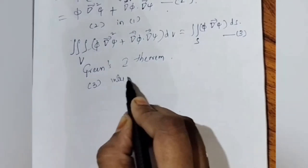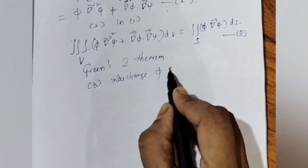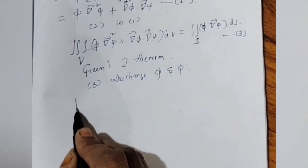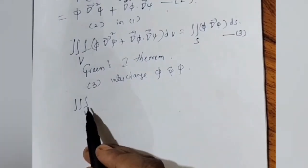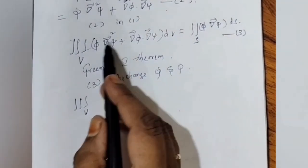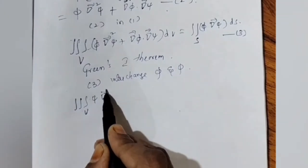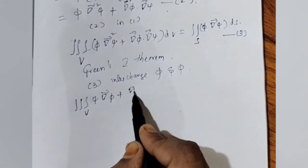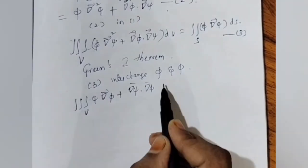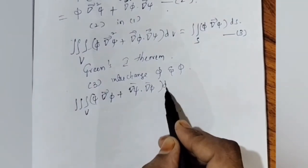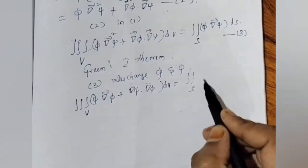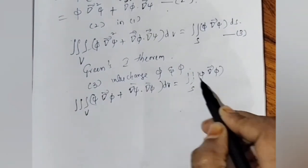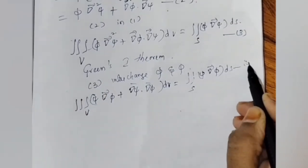Now in equation 3, interchange π and ψ. We get: volume integral of (ψ∇²π + ∇ψ · ∇π) dV equals surface integral of ψ∇π · dS. Put this as equation 4.